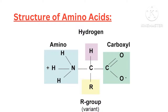Ionization properties. Amino acids exist as zwitterions at physiological pH of 7.4. A zwitterion is a molecule that contains an equal number of positively and negatively charged functional groups. The amino group is protonated (NH3+) and the carboxyl group is deprotonated (COO-). This dual charge contributes to the solubility and buffering capacity of amino acids. The isoelectric point is the pH at which an amino acid carries no net charge.